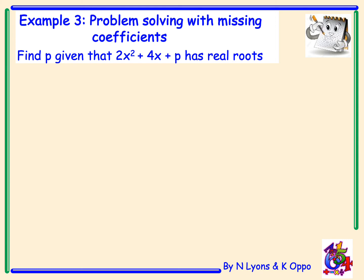Example 3: problem solving with missing coefficients. Find p, given that 2x squared plus 4x plus p has real roots. They've told you something about the discriminant. When you see a question that mentions the nature of roots, you have to recognise it as a discriminant problem. We're going to have to use b squared minus 4ac.